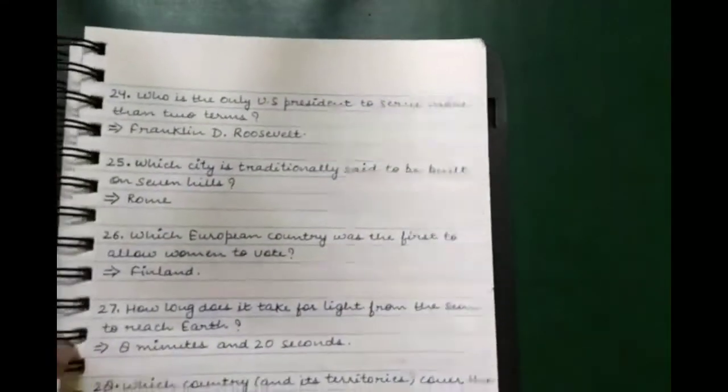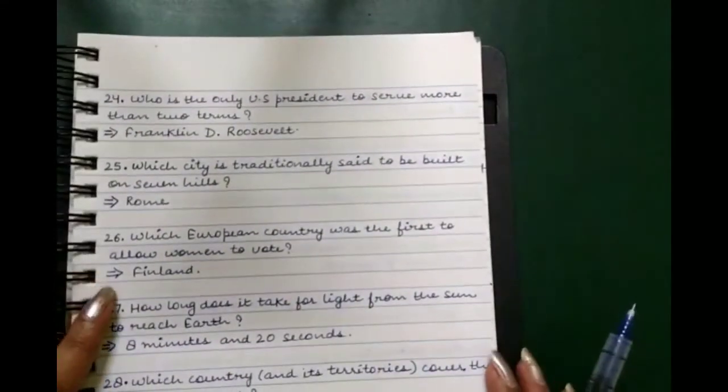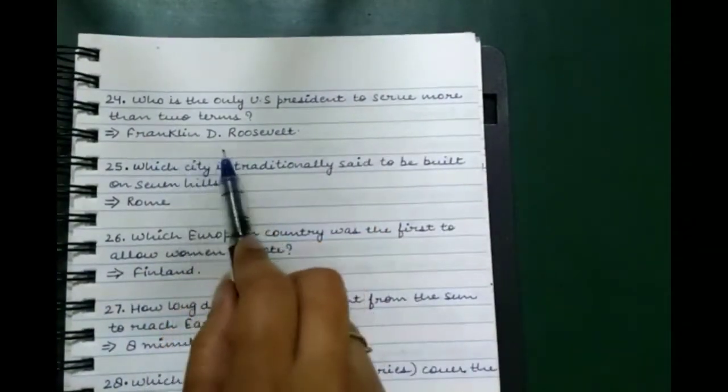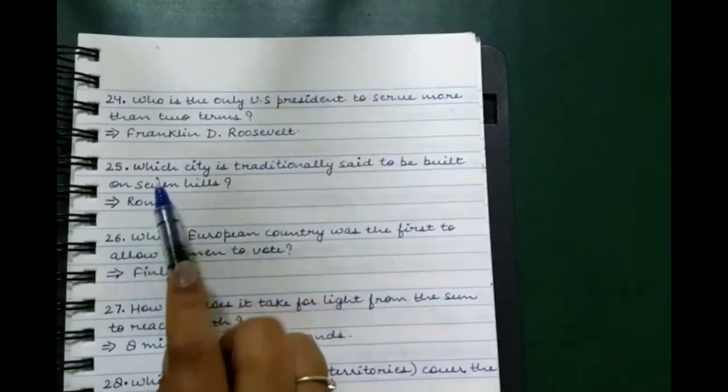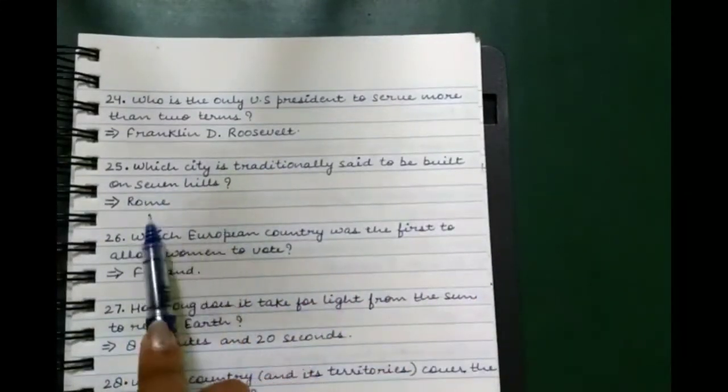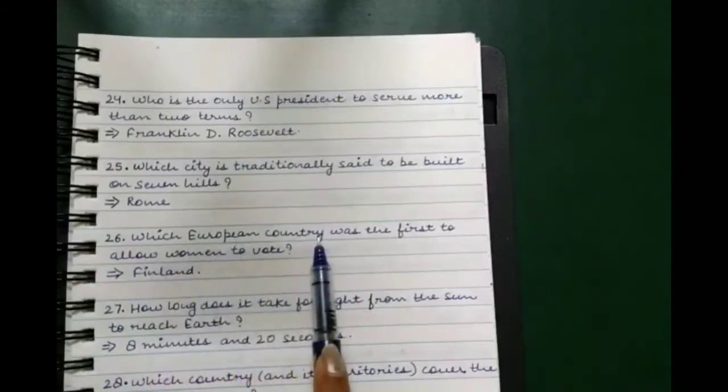How many different breeds of dogs are there in the world? 339. Which Russian author begins 'All happy families are alike'? Leo Tolstoy. Who is the only U.S. president to serve more than two terms? Franklin D. Roosevelt.